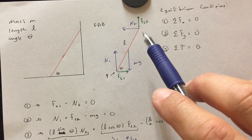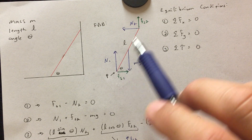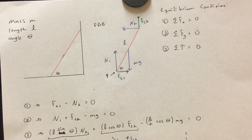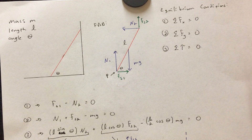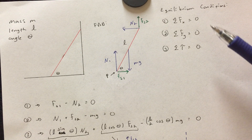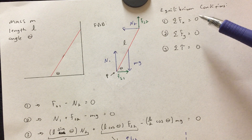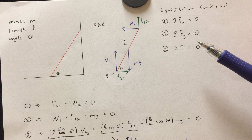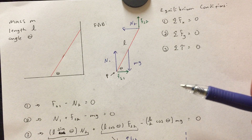I've also included two frictional forces: static friction one and static friction two. The idea is that this ladder is not sliding. Sometimes the wall will be frictionless so you won't have a static friction force there, but I included both so we can see how to completely characterize this system. Next I would apply the equilibrium conditions. If this thing is in equilibrium it has to satisfy all three: sum of forces in the X direction equals zero, sum of forces in the Y direction equals zero, and the sum of the torques equals zero.